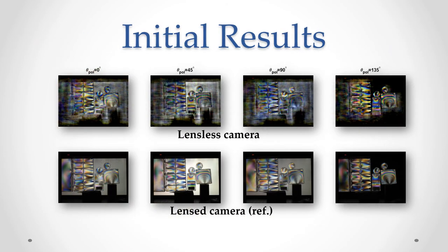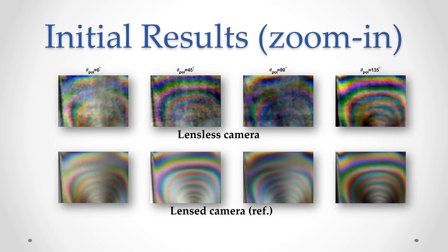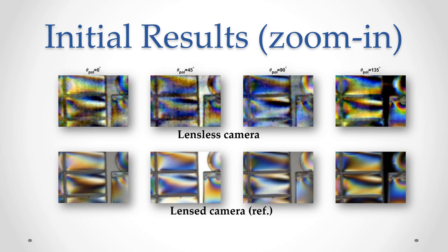Here we can see initial results of a scene with polarized light and some birefringent materials. Lens camera images are presented as a reference. The colored pattern, which is caused by the birefringence of the plastic, cannot be clearly seen, and the different transmission of the backlight also behaves as expected.